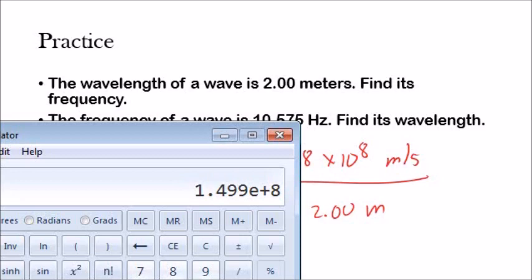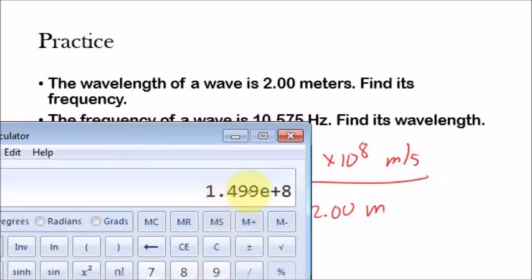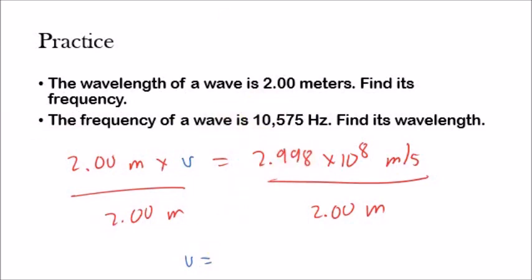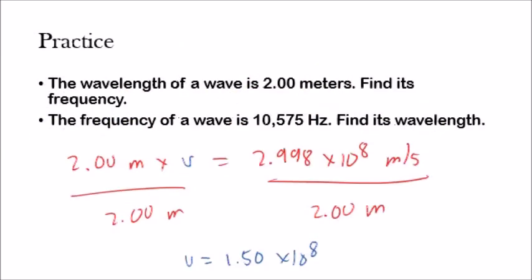Important thing to remember: significant digits still apply. This number has four significant digits, this number has three, and we're doing division, so we go with the smaller number. Our answer needs to be rounded to three significant digits, so that would be 1.50 times 10 to the eighth. Don't forget our units — the unit for frequency is 1 over s or hertz. So our answer is 1.50 times 10 to the eighth hertz.